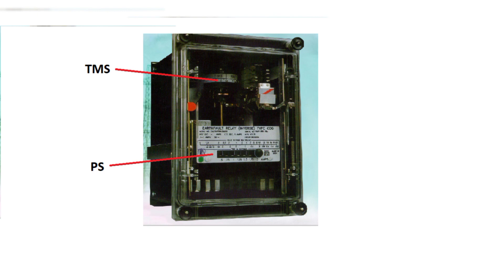Next is the standard inverse overcurrent relay — the English Electric CDG relay. Here I am showing one relay. At the bottom you are seeing the plug setting. You can see various settings: 0.5, 0.75, 1, 0.25 — any one of these settings you have to choose. Plug setting means current setting. If the rated current is 1 ampere, setting 1 means 1 ampere, like that.